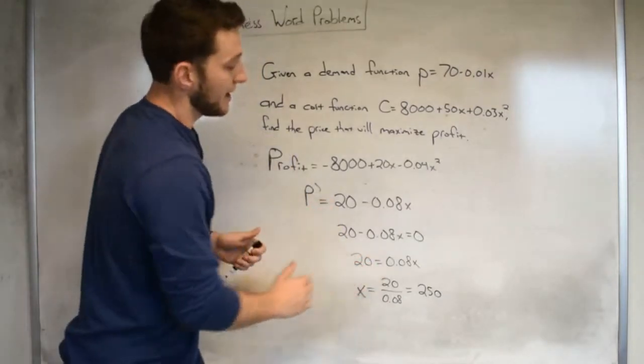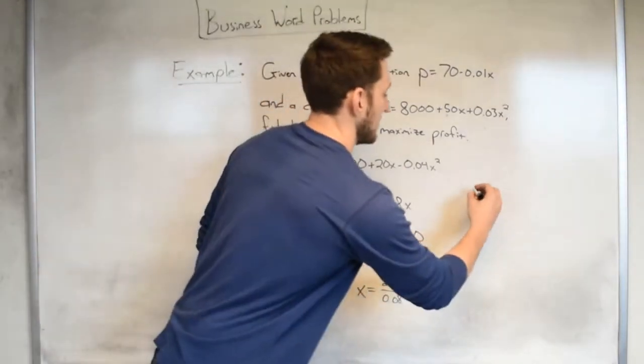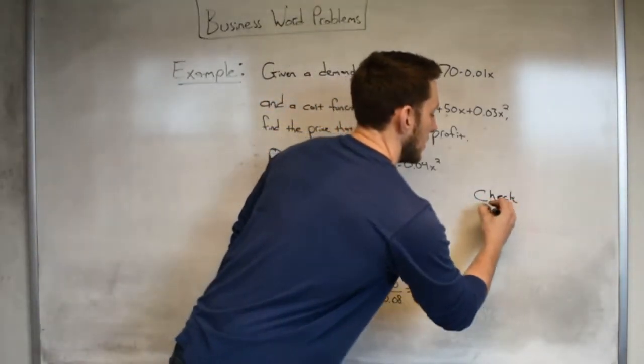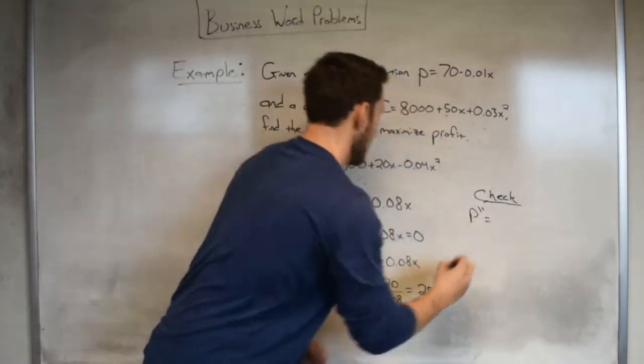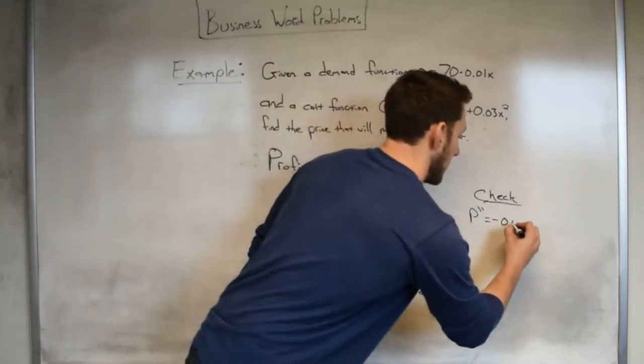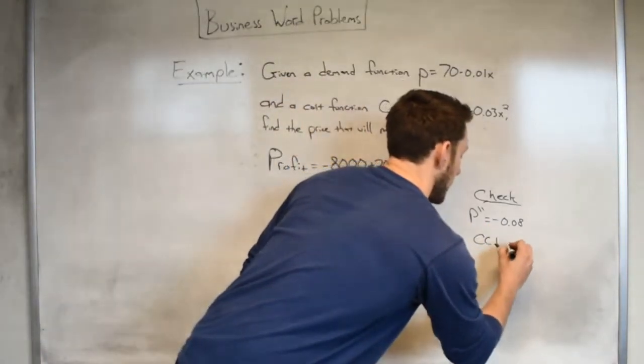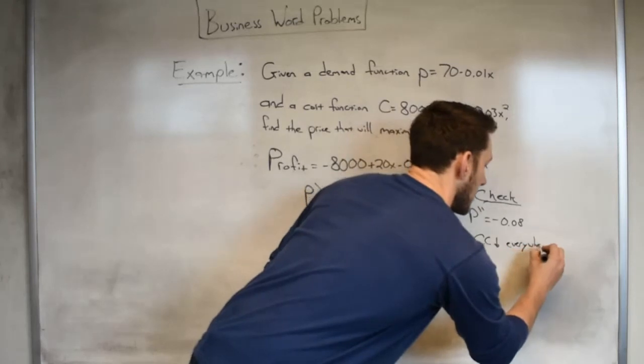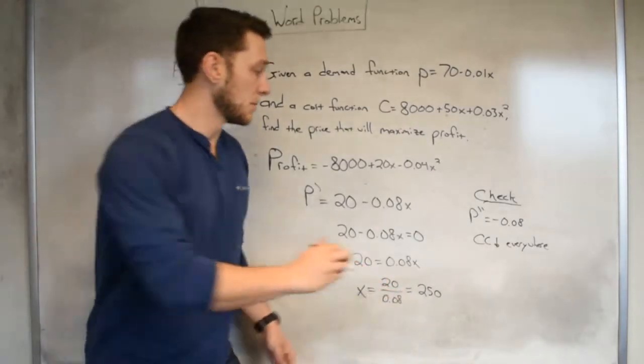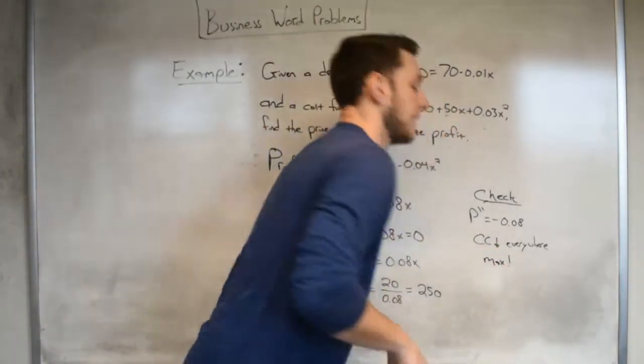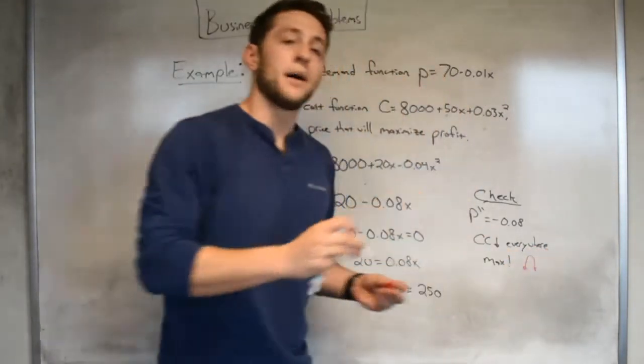From there, it's up to us to actually check, does this thing lead to a maximum? Now remember, a very simple way of doing that would be to get our hands on p double prime. So a brief check: since p double prime of x is equal to negative 0.08, that means that we're concave down because of negative, which in turn means that since we're concave down at x equals 250, we will have a max. And you can think about that because our graph will look, since we're concave down, like a downward opening parabola.